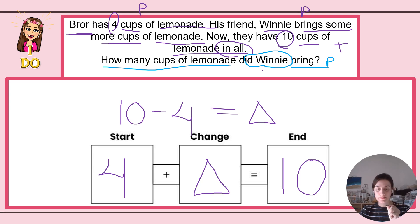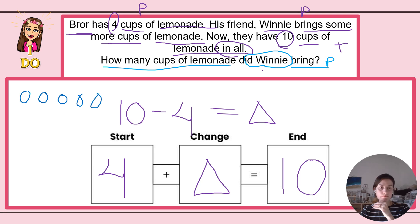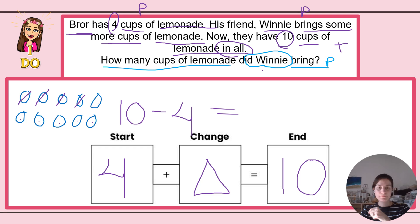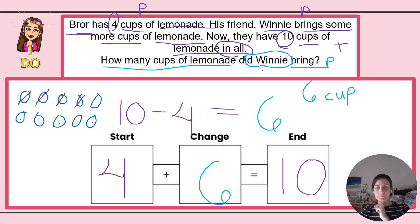Here I'm using my start-change-end strategy as well as drawing a picture to help me solve. I'm going to draw 10 circles and take away four of those. One, two, three, four. Now let's count how many we have left: one, two, three, four, five, six. Which means that 10 minus four equals six. And it also means that four plus six equals 10. So how many cups of lemonade did Winnie bring? She brought six cups of lemonade.